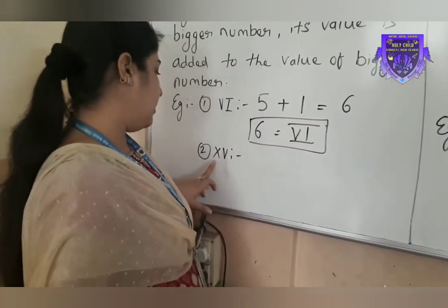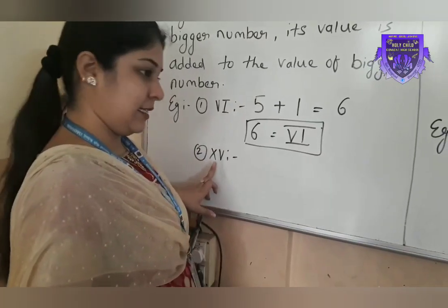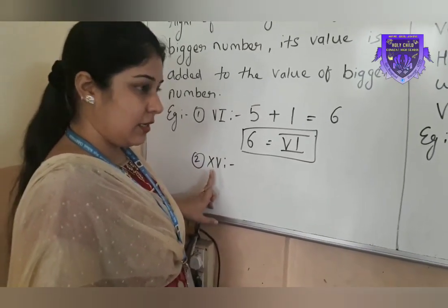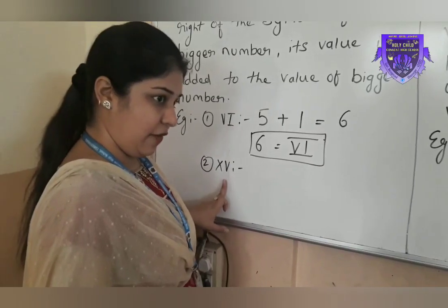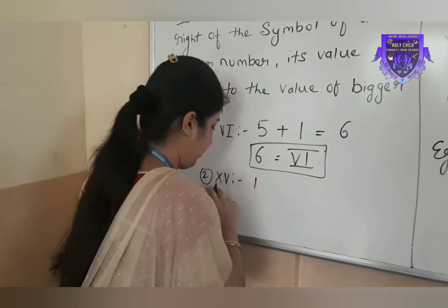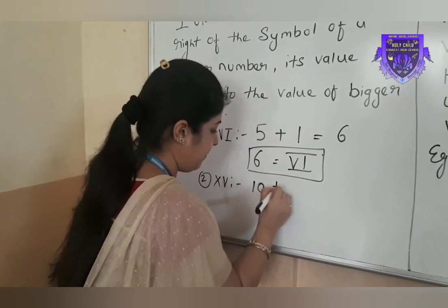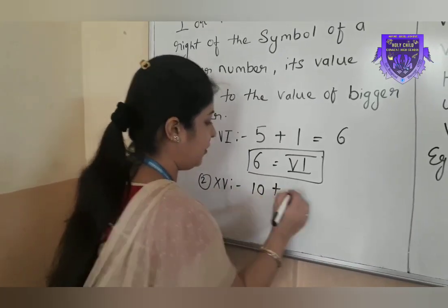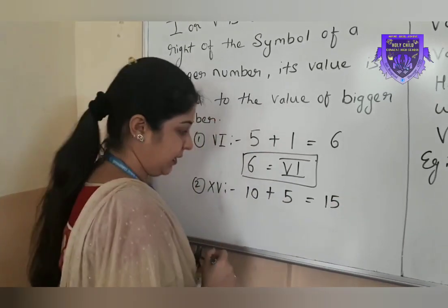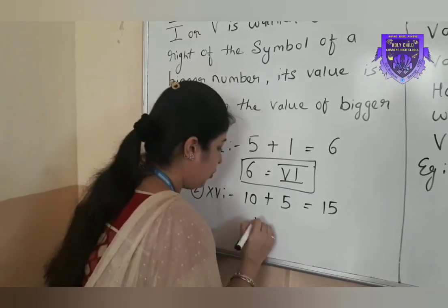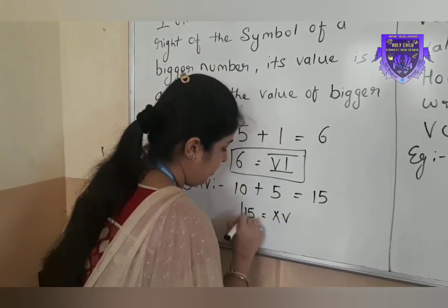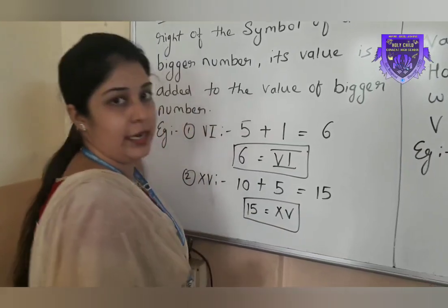Second example: X then V. Value of X is bigger. V is written on the right side of X. So we have to add up these values. Value of X is 10, plus V is 5. 10 plus 5 gives us 15. So 15 is written like this in Roman numerals.